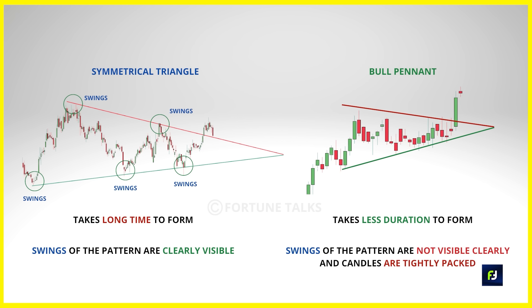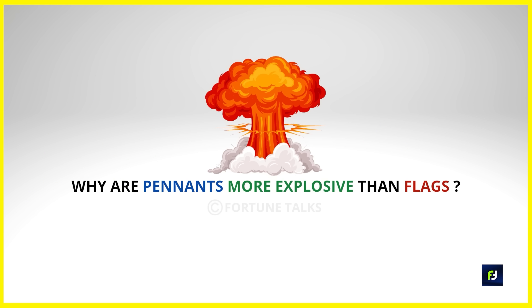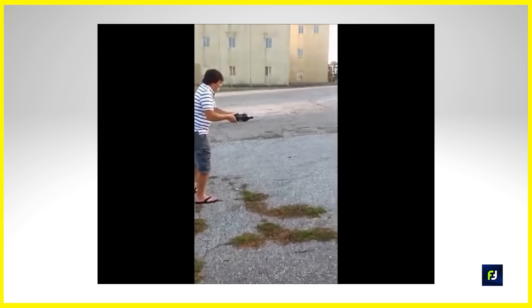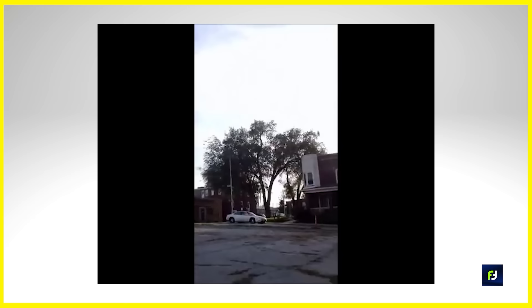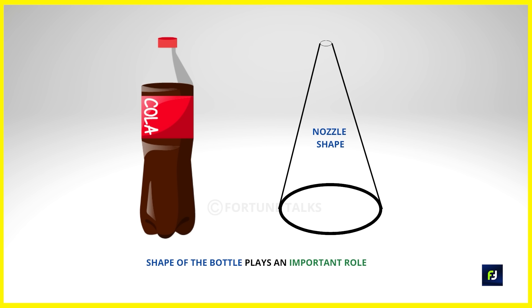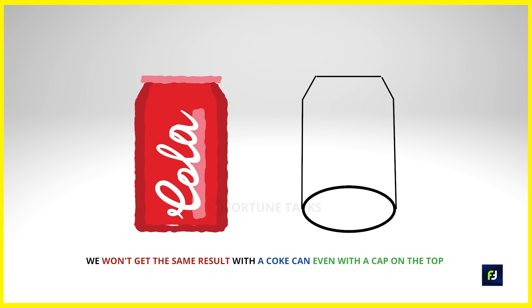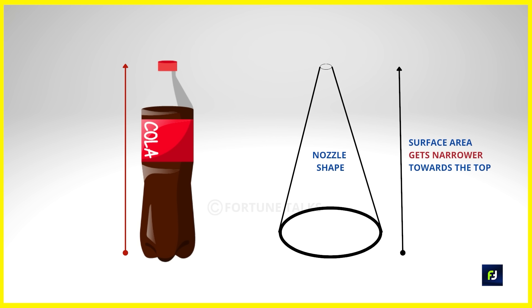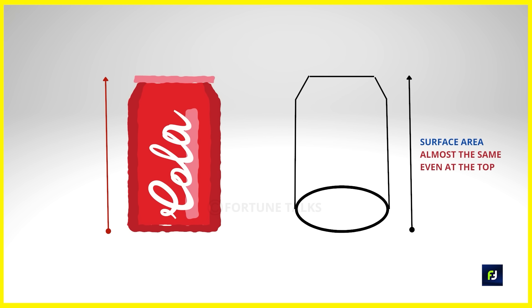The difference between a bull pennant and a symmetrical triangle — they both look similar — is in the duration of their formation. With a symmetrical triangle you can clearly see the swings, but the candles of the bull pennant are too crowded and volatile to see the swings. Bull pennants create a more explosive breakout than bull flags. Think of shaking a Coca-Cola bottle and throwing it — the cap explodes because the bottle's shape narrows towards the top, building pressure. The same physics-like effect applies to buyers and sellers in a bull pennant.